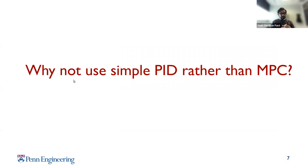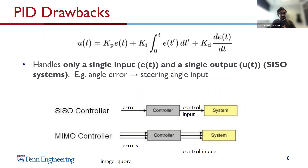If you've taken a controls class like 406 or 504, you might ask: why don't we just use PID or lead-lag controllers for control of the car? PID control is usually a single-input, single-output controller — it takes in a single error signal showing how far you are from a desired reference and maps it to a single control variable. For example, taking your heading angle error and mapping it to the steering angle.